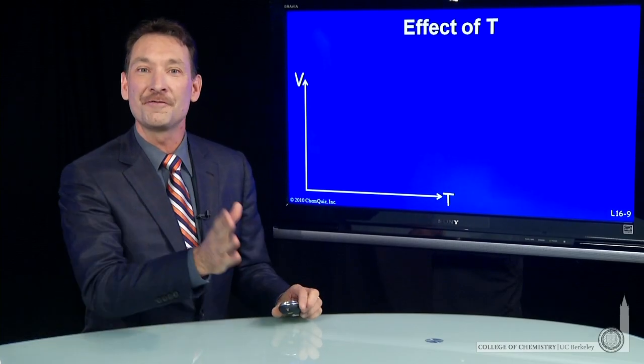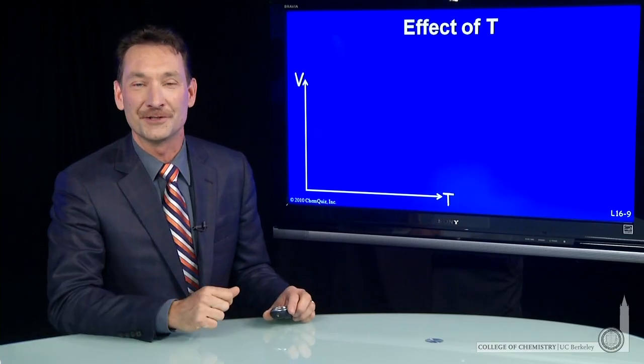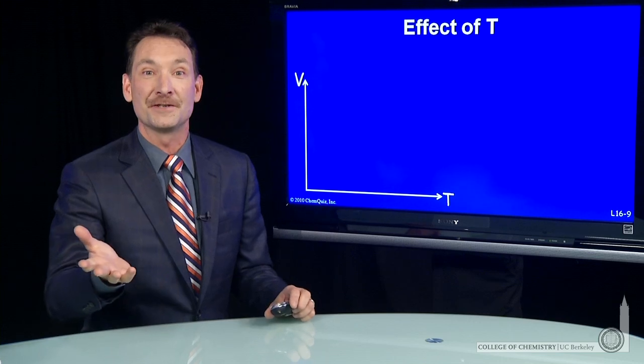For an ideal gas, the product of the pressure and volume is constant for a fixed temperature. What happens when we change the temperature?